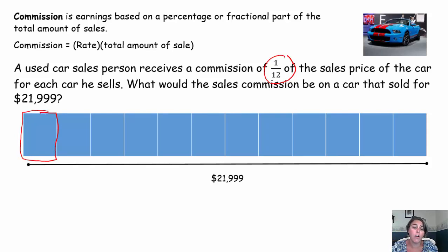So if I break it into 12 parts, $21,999, breaking that total into 12 parts means dividing it into 12 equal groups. So if we take $21,999 and we divide by 12, we get $1,833.25.